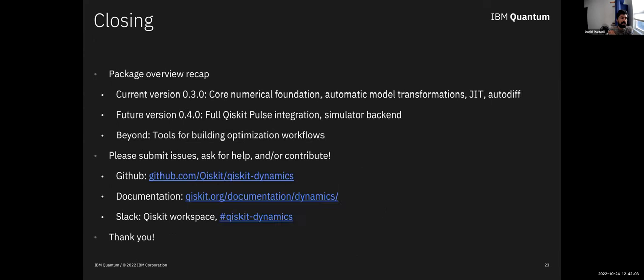I'll close now. Just to recap, talking about Qiskit dynamics, it's at its current version 0.3.0, establishes the core numerical foundation, builds in things that allow you to do automatic model transformations, compile and auto differentiate. In the future we will have full Qiskit pulse integration so you can interact with the simulator in the same way. It's an open source project so if you're interested, if you use it please submit issues, ask for help, or contribute. You can check out the GitHub, there's lots of documentation, tutorials, user guide, things like this. If you're interested in chatting there's also a Slack channel in the Qiskit workspace that you can reach out and I will respond personally. Okay that's it, thank you.